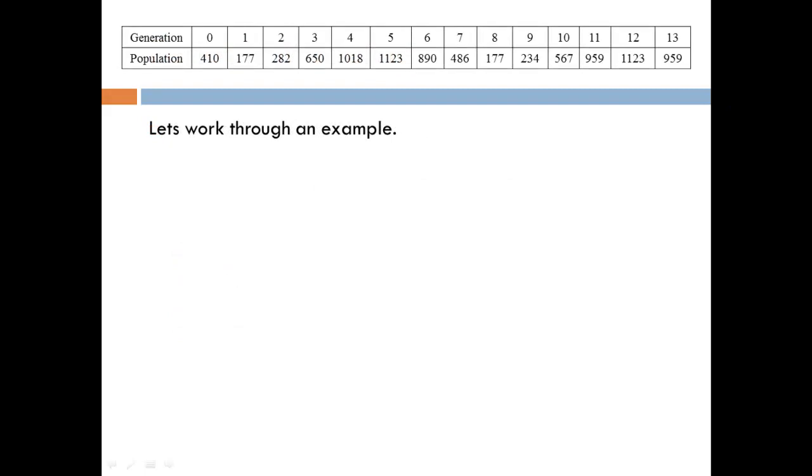So let's look at an example. We have some population based on the generation, and say we start with our initial generation having a population of 410. After that first generation, it actually decreased down to 177. But then for the next few generations, it increases all the way up to the 5th generation where there's 1,123. But again, it decreases until the 8th generation where there's 177.